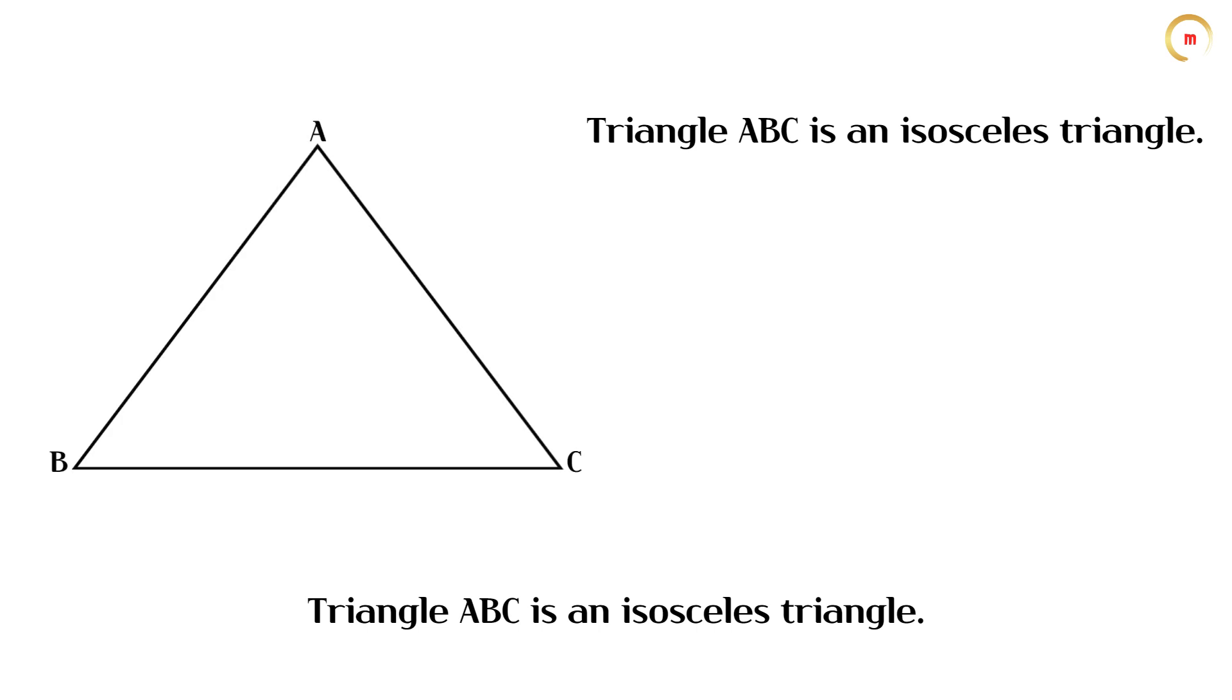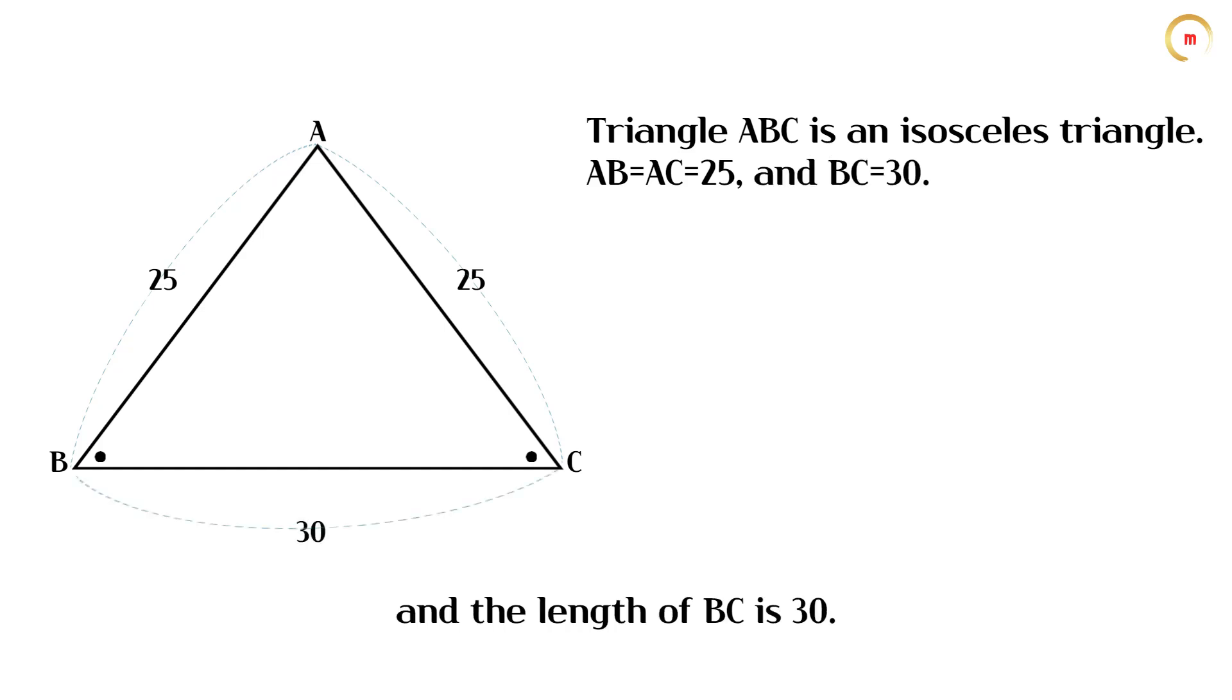Triangle ABC is an isosceles triangle. The lengths of AB and AC are 25, and the length of BC is 30.